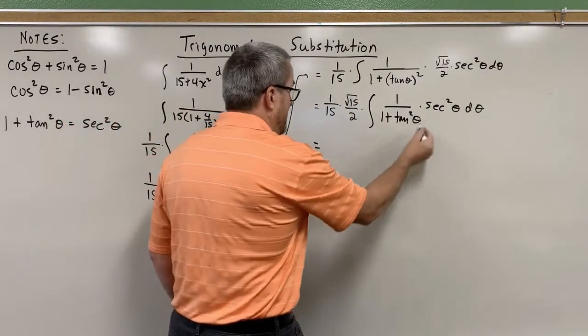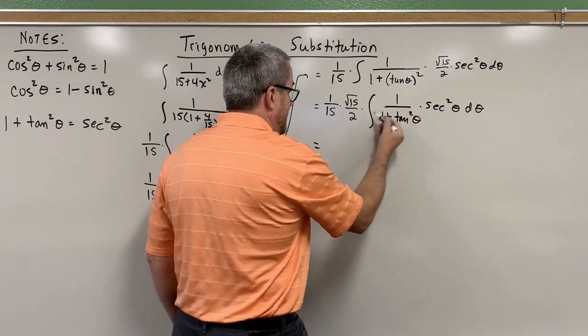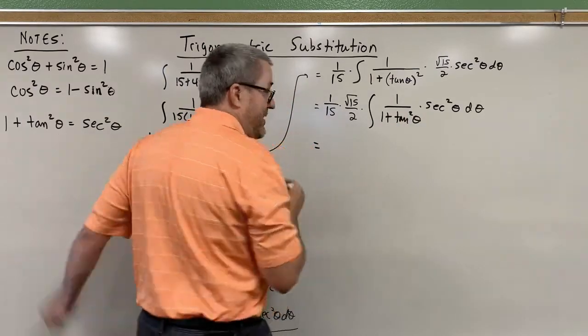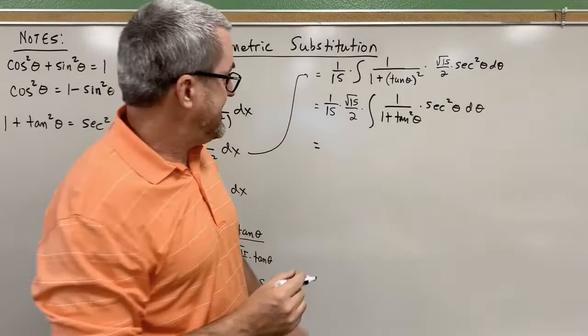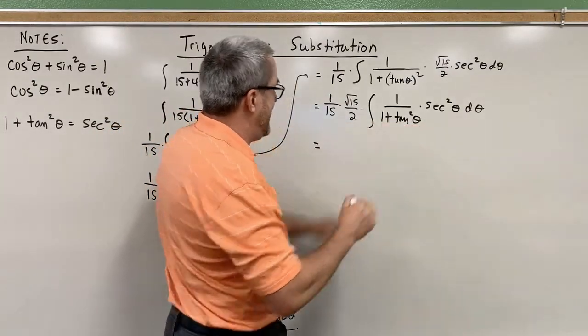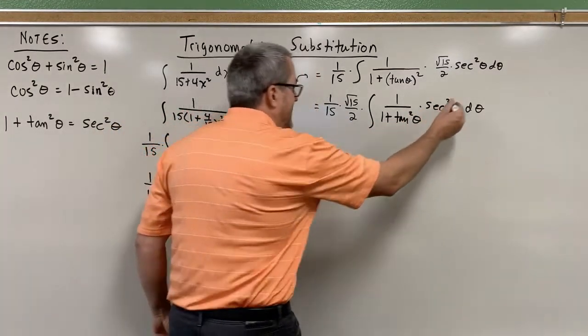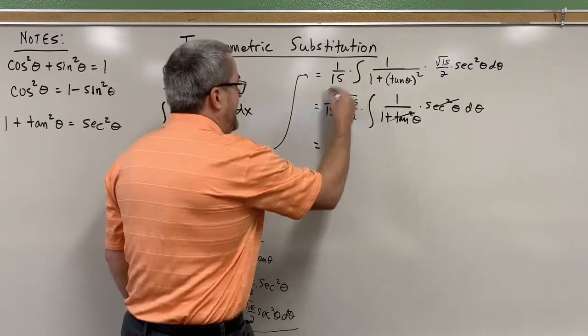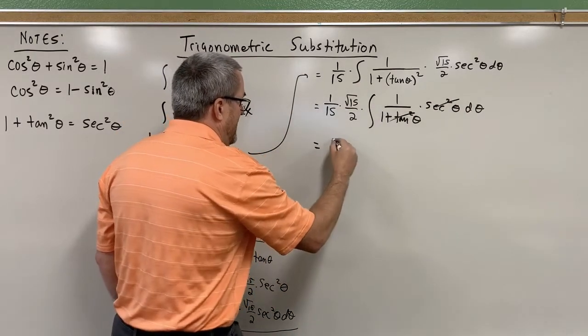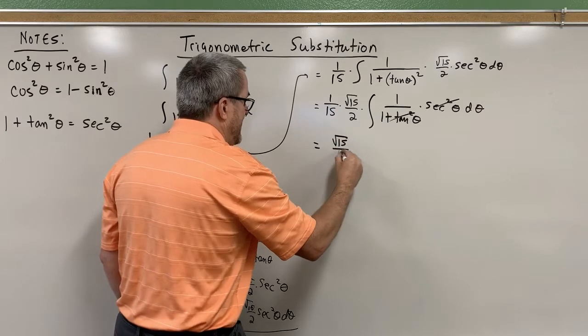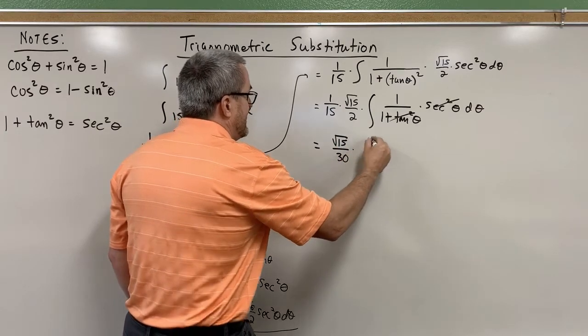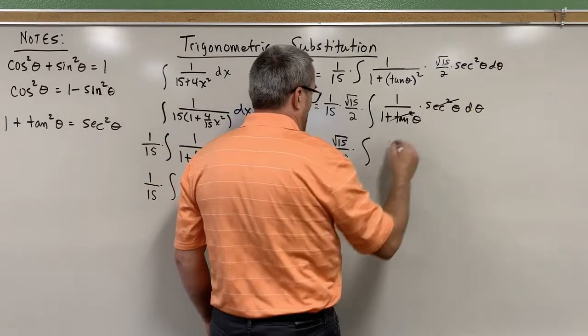Now, 1 plus tangent squared is the same as secant squared. Thank you, Pythagorean identities. So secant squared in the denominator multiplied by secant squared here. We know that's going to simplify. And if we kind of simplify this a little bit, square root of 15 over 30 times the integral of just 1 d theta.